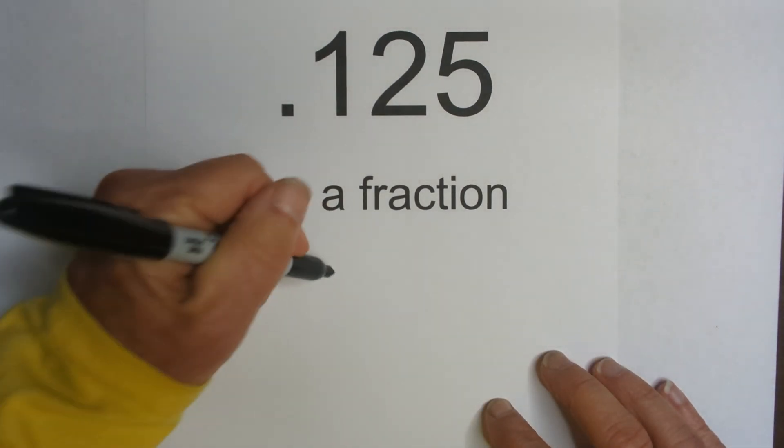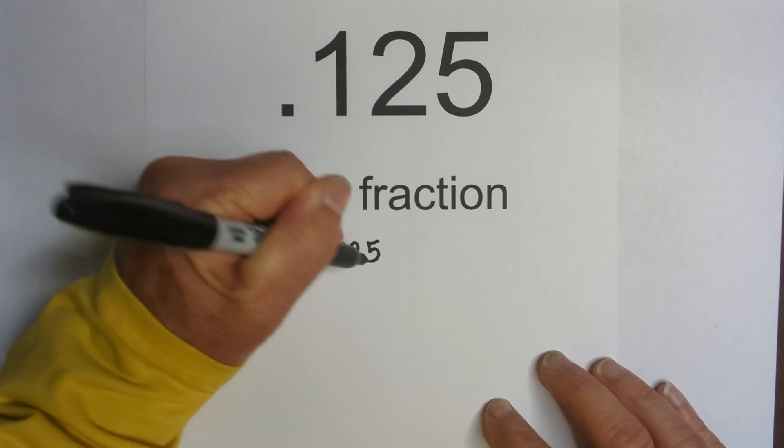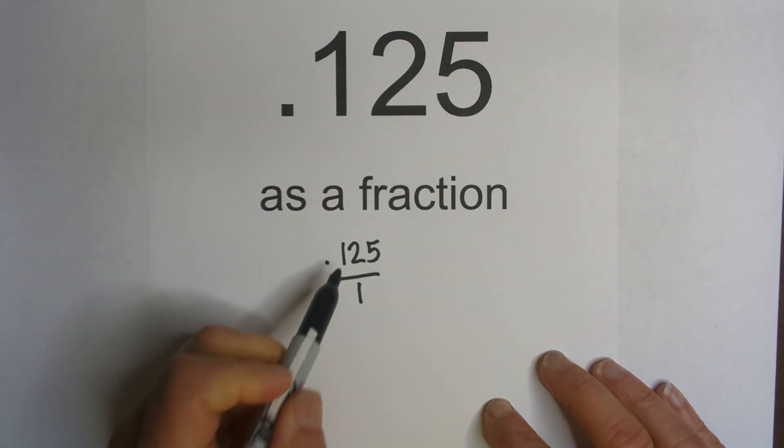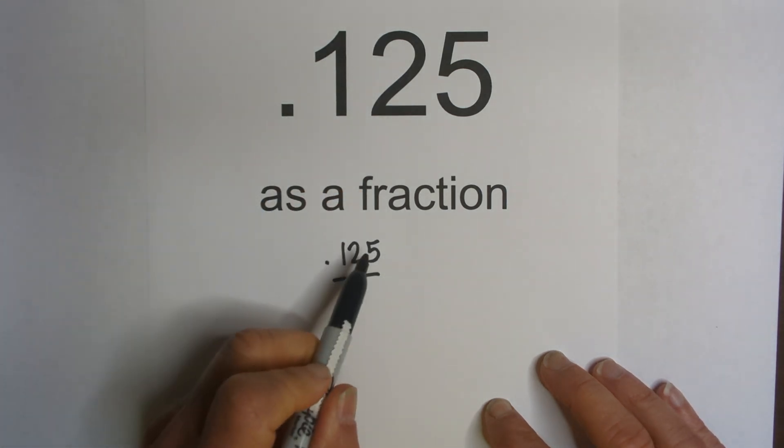So I'm going to begin by placing 125 thousandths over 1. And what I need to do is move the decimal all the way to the right.